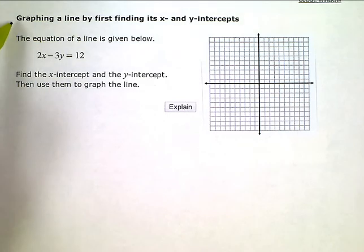Graphing a line by first finding its x- and y-intercepts. The equation of a line is given below: 2x - 3y = 12. Find the x-intercept and the y-intercept, then use them to graph the line.